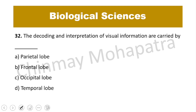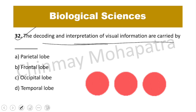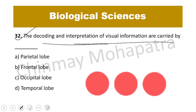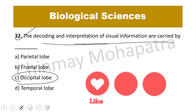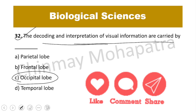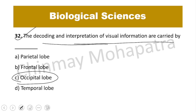Question number 32: The decoding and interpretation of visual information is carried out by which area? Visual information is controlled by the occipital lobe — C is the right answer.